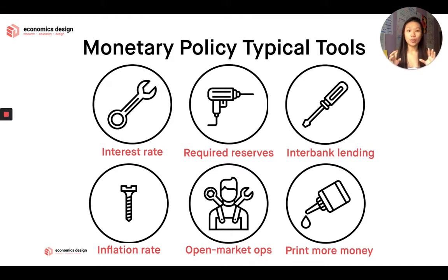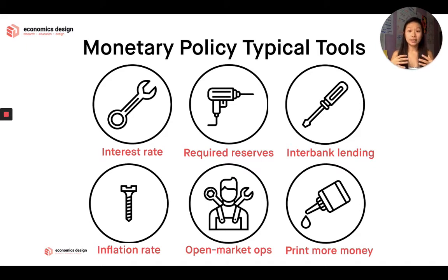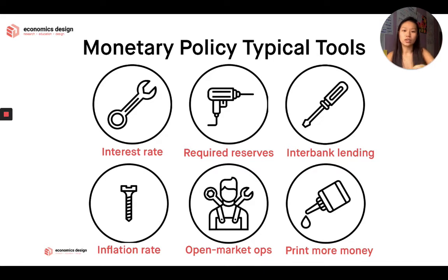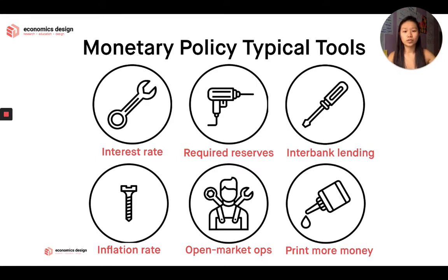The second tool is required reserve — money in the bank vault. Central banks can also play with that. For example, the People's Bank of China recently told commercial banks to reduce their required reserve. That means banks put less RMB in the vault, so they can take the extra out and start lending it to people. That means putting money into the economy and trying to stimulate growth — like using a screwdriver to open the vault, take money out, and let it go into the economy.